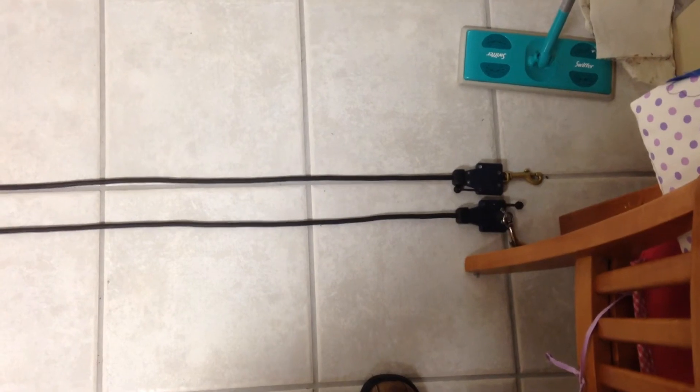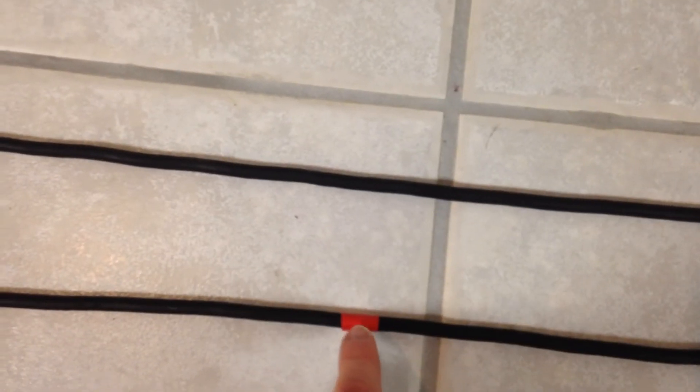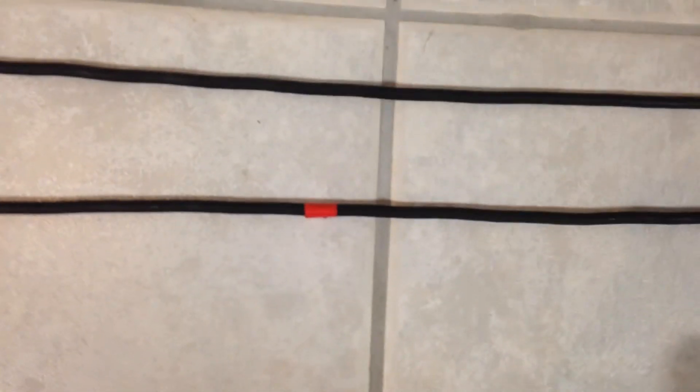Start at the end here and start counting off floor tiles at 1, 2, 3, 4, 5, 6, 7, 8, 9, 10, 11, 12, 13, and 1 inch. And I put a red mark right there where I think the fault is going to be in the cable.